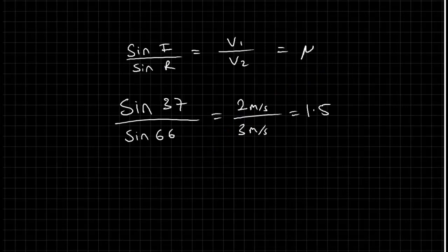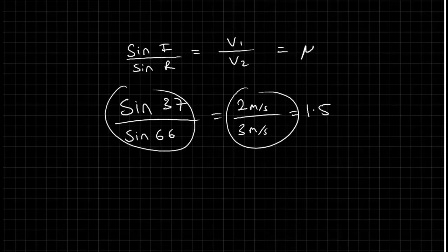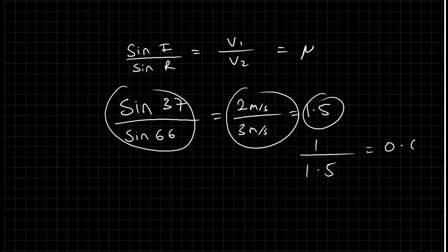For that whole question you could have used the velocities or the angles, and you'd always get — depending on which direction, glass to air or air to glass — either 1.5 or 1 over 1.5, which is 0.66 recurring.